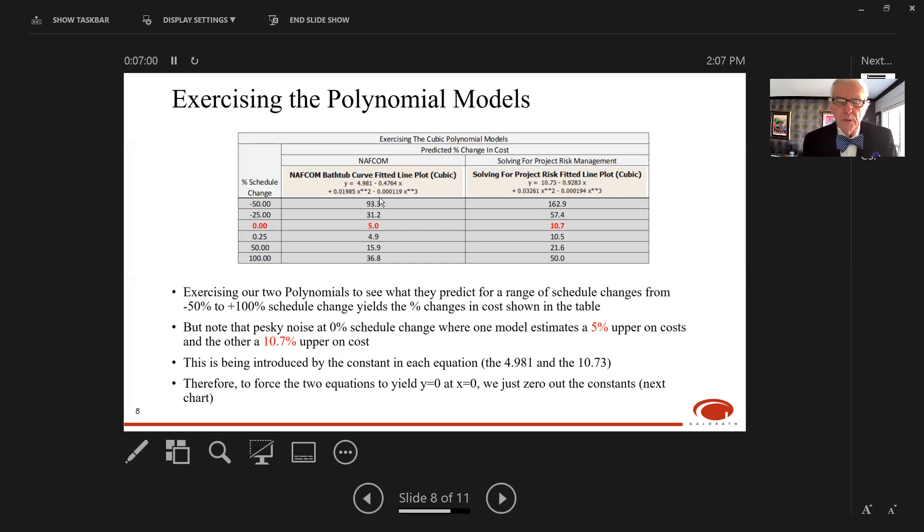If you study those equations, you'll see what's going on. It's just the constant term coming into play. In the left equation for NAFCOM, we have a constant term of 4.981, which gives us that five percent, because at X equals zero the rest of the equation zeros out and we're left with just that constant term. Same for the polynomial on the right with constant term 10.7. Our problem is being introduced by the constants in each equation.